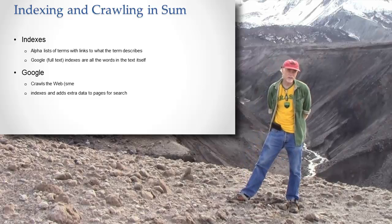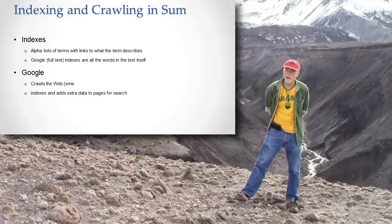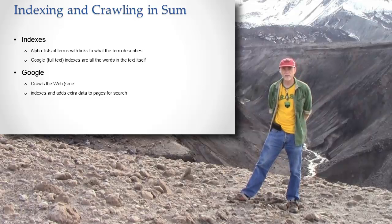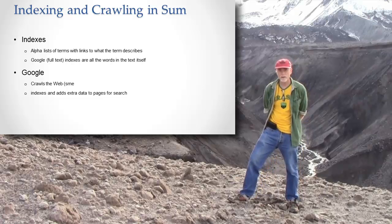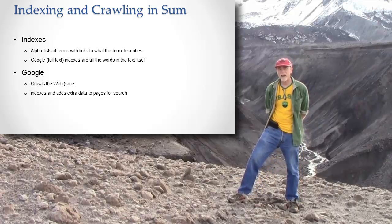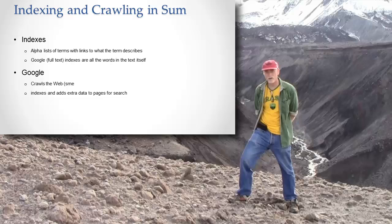In the case of other indexes, it could be phrases — a two or three word phrase, like 'arachnids in Africa.' That's a single index term. But in Google, it's all single words because they shake all the words apart. So that's the idea of an index in general.